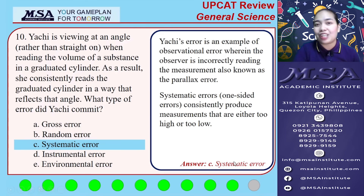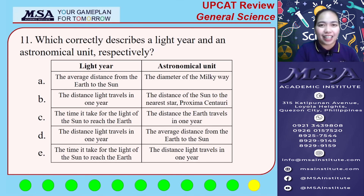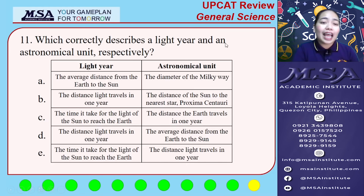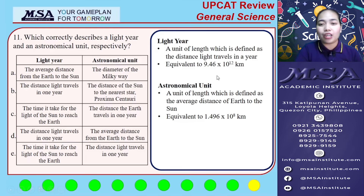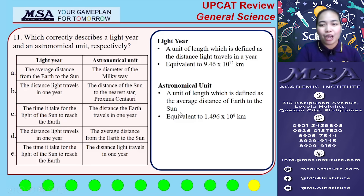To know more about errors and uncertainties, you can check our video about it. Number eleven, the last number: which correctly describes a light year and an astronomical unit, respectively? Remember that a light year is a unit of length defined as the distance light travels in a year. An astronomical unit is a unit of length defined as the average distance from Earth to the Sun. So for number 11, the answer is letter D.